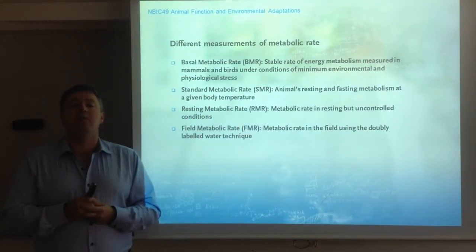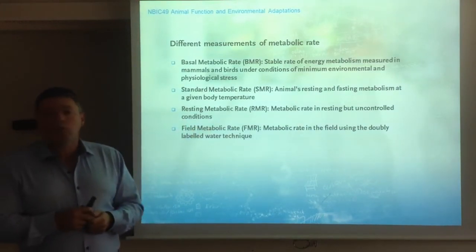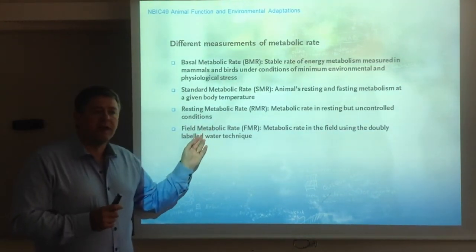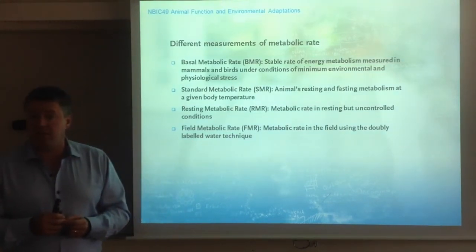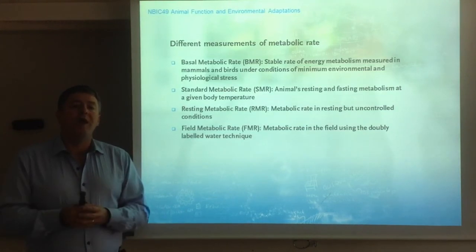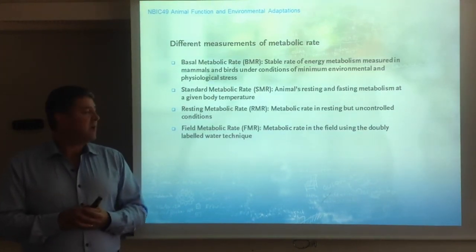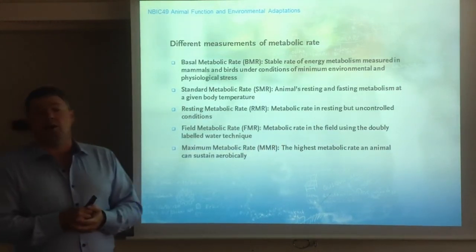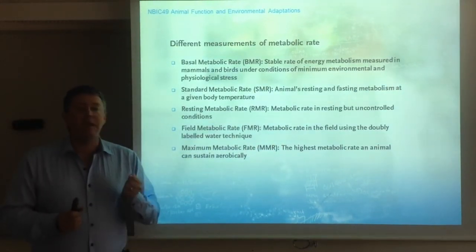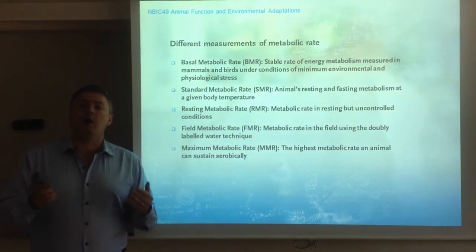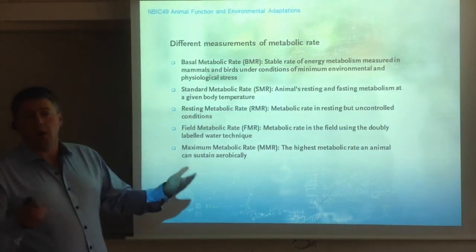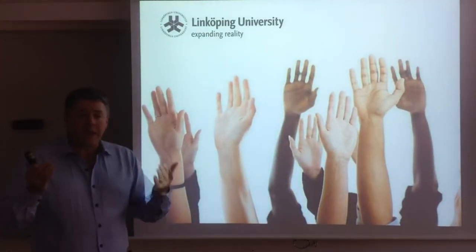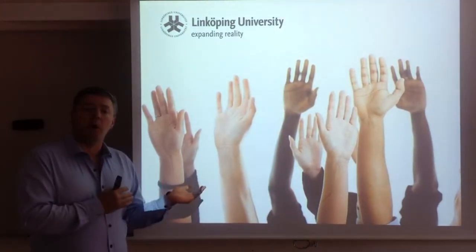The field metabolic rate is an average measurement — whether the animal was running or resting. It's not particularly useful for physiologists who want to understand minute-by-minute processes, but it's much more useful for ecologists who want an appreciation of the whole energetic budget of an individual. Finally, we have the maximum metabolic rate, MMR, which is the highest metabolic rate an animal can sustain aerobically. You put the animal into exercise — in humans, a static bicycle is one common method — but any way that increases metabolism can be used to define MMR.